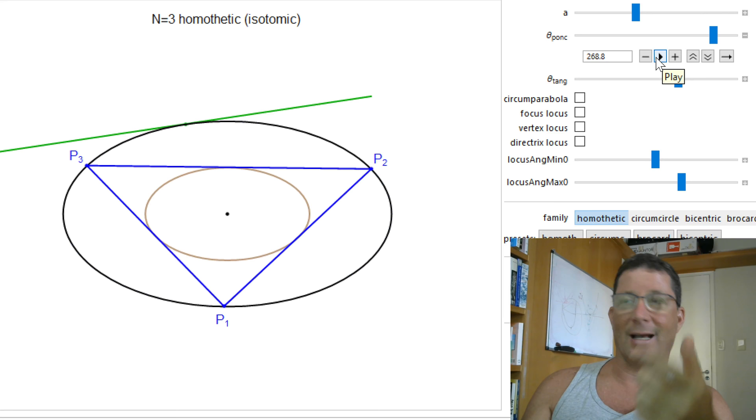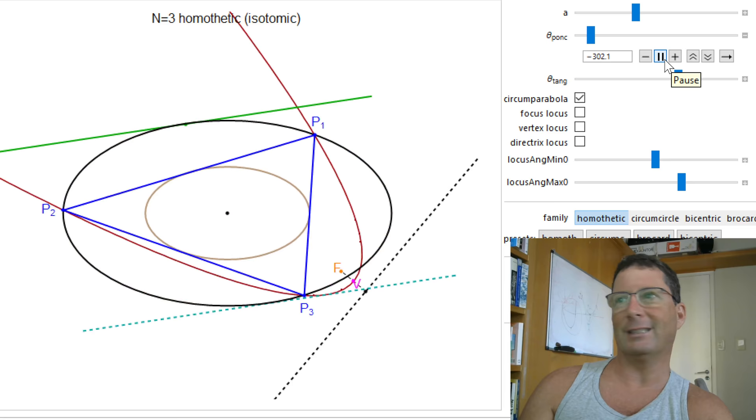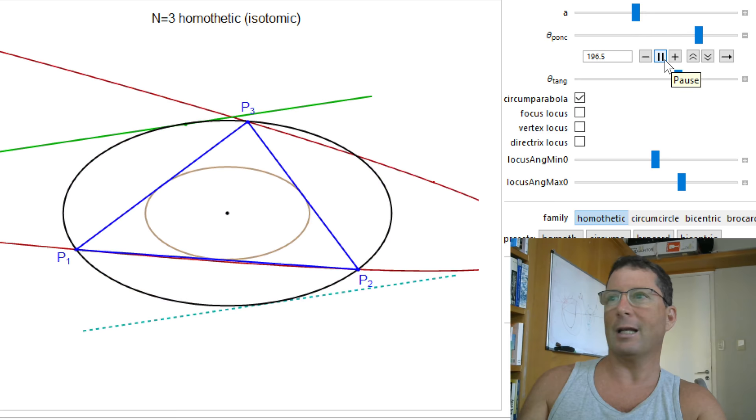OK, so now I actually want to show what the isotomic of this green line looks like, the circumparabola, that is the isotomic image of this green line, with respect to this family. Let's go ahead and draw that. So for a particular triangle, let's see if I can do this without blowing up Mathematica. It's going to blow up at positions when the circumparabola goes to infinity. So you can see here that Mathematica is flashing when that happens. But let's ignore that.